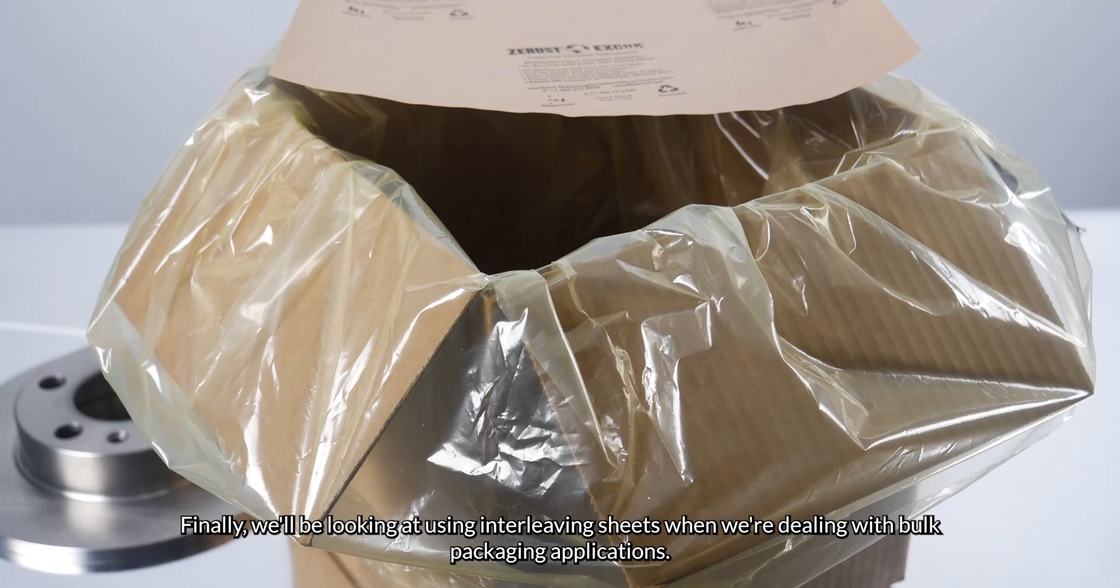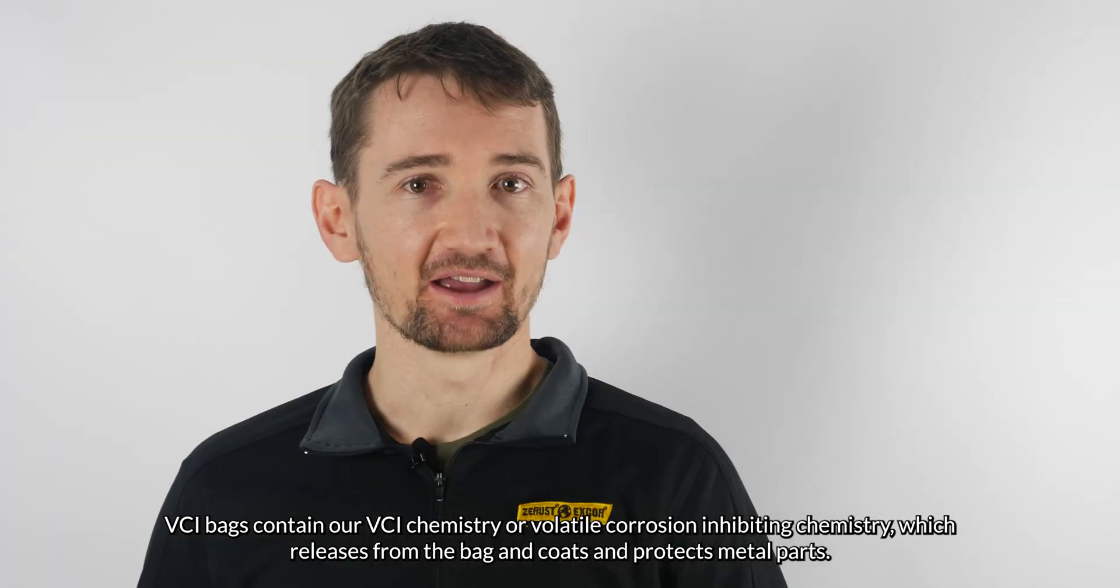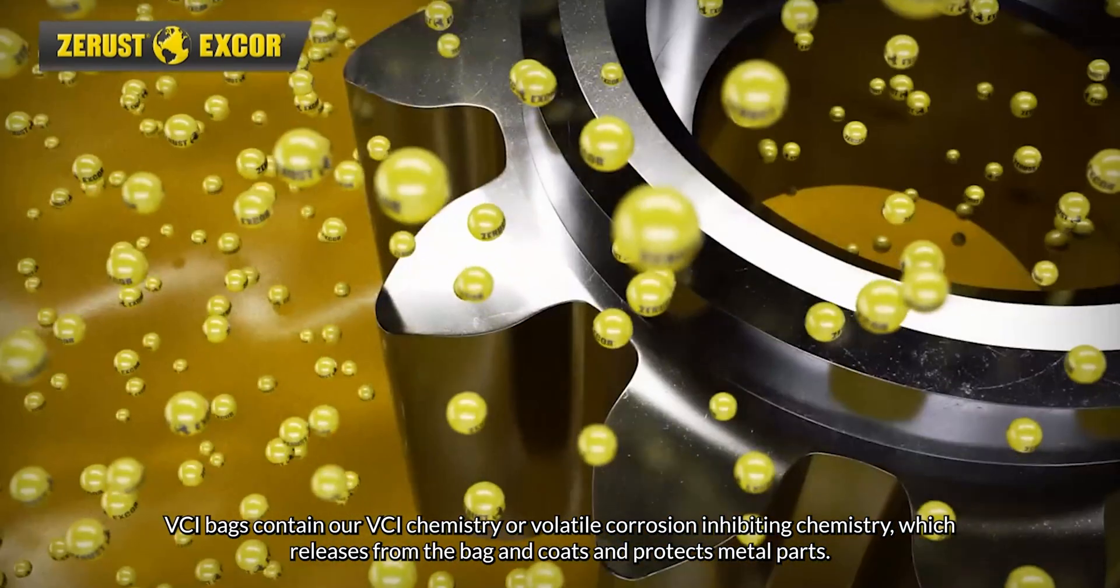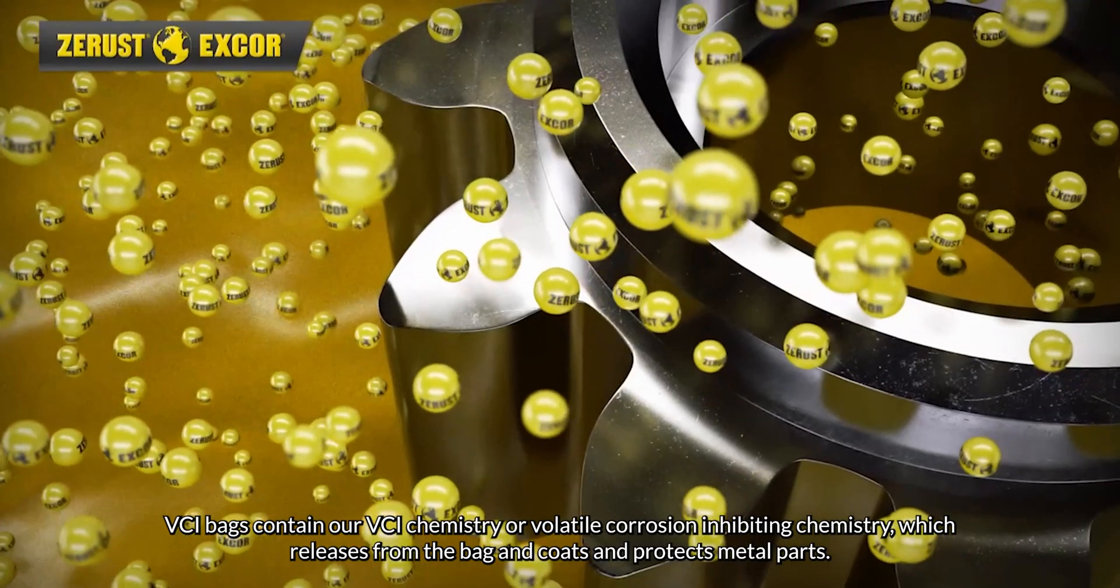Finally, we'll be looking at using interleaving sheets when we're dealing with bulk packaging applications. VCI bags contain our VCI chemistry or volatile corrosion inhibiting chemistry, which releases from the bag and coats and protects metal parts.